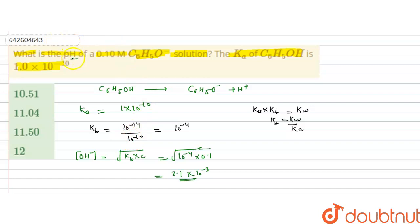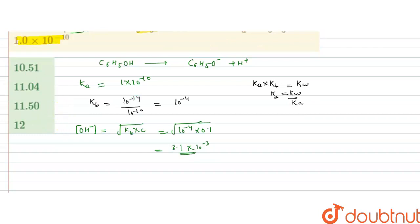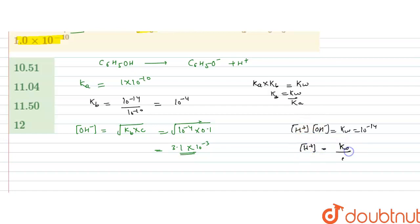This is the OH⁻ (hydroxide ion) concentration. To calculate pH, we first need [H⁺]. Using the relation [H⁺][OH⁻] = Kw = 10⁻¹⁴, we get [H⁺] = Kw / [OH⁻] = 10⁻¹⁴ / (3.1×10⁻³) = 3.2×10⁻¹² M.